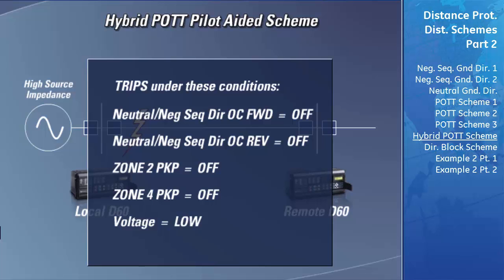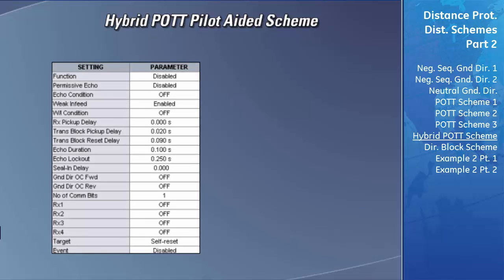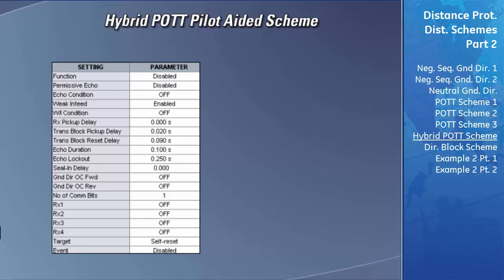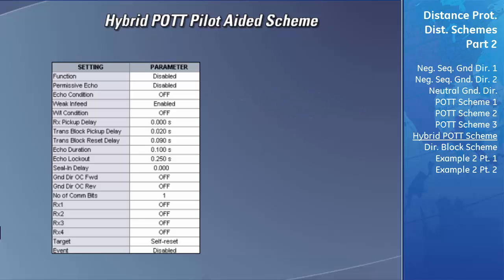We will now go over the settings that need to be configured to have the hybrid POTT scheme operate correctly. Before the hybrid POTT scheme can be used in the relay, it must first be enabled in the function field. If you wish to use the echo function, you will need to set the permissive echo field to enabled. The echo condition field needs to be set to tell the D60 under what conditions to echo the hybrid POTT keys received if the permissive echo field is set to custom. If you wish to use the feature that allows clearing of faults on transmission lines fed by a weak source, you need to set the field labeled weak infeed to enabled.